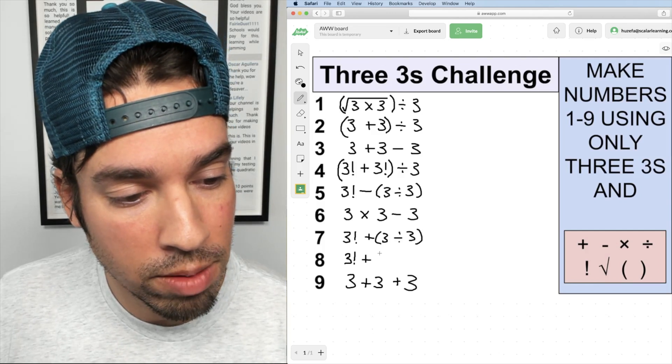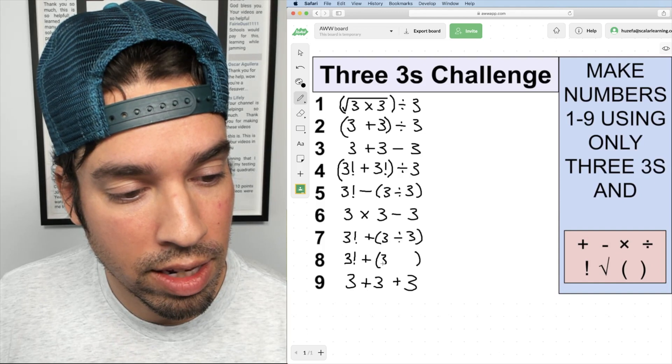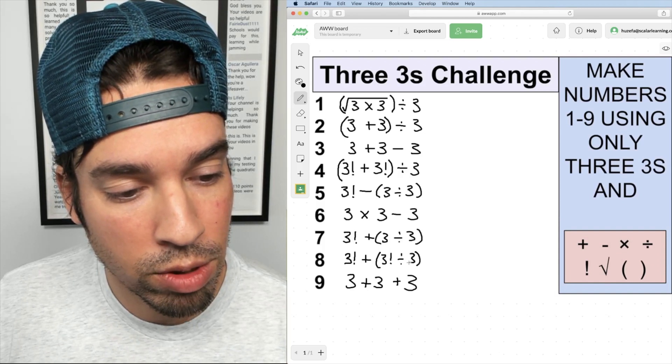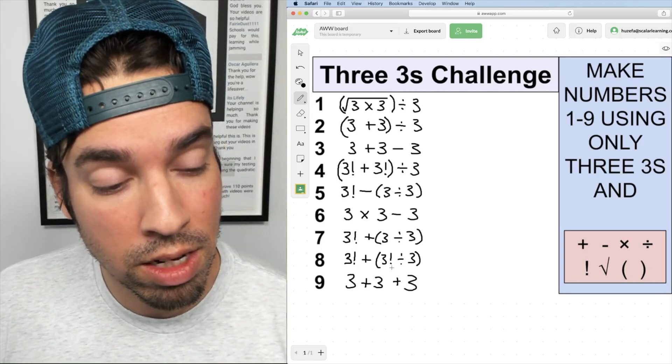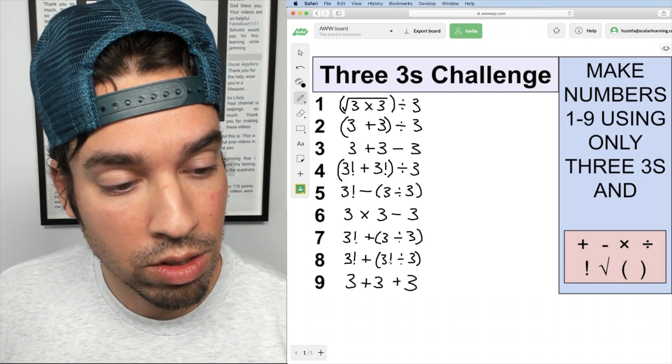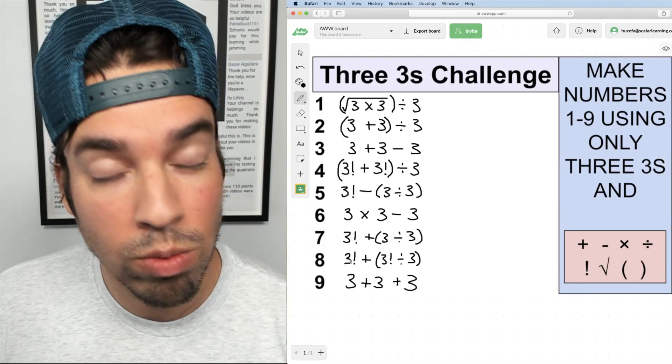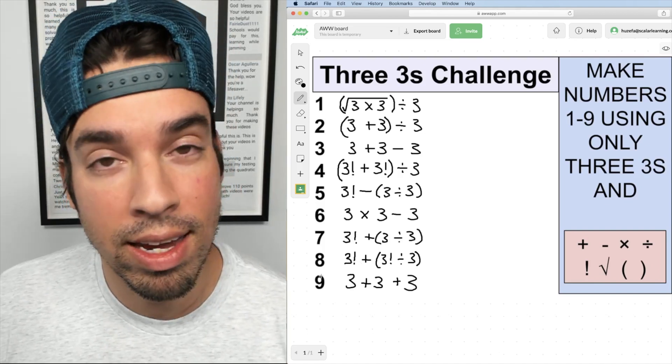So the way that I'm going to get a two, and again I'm going to use parentheses just out of caution, is I get three factorial which is six divided by three. So this is six divided by three gives us two. Then I add it to that three factorial which again has a value of six. So that's six plus two gives me eight.